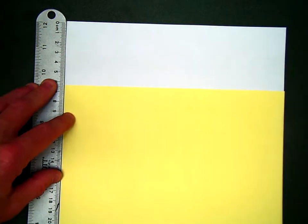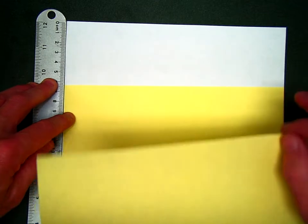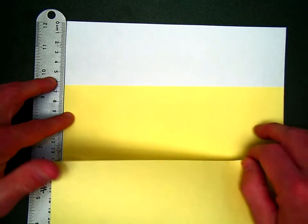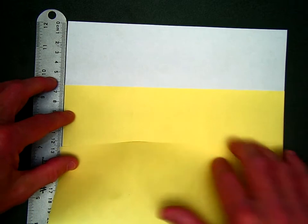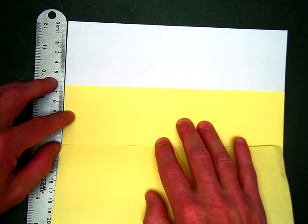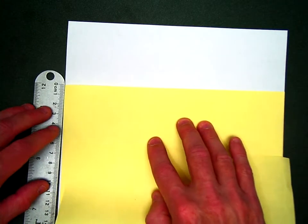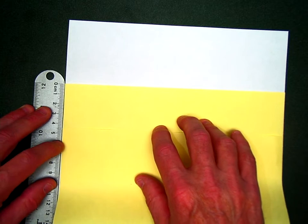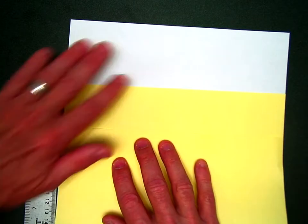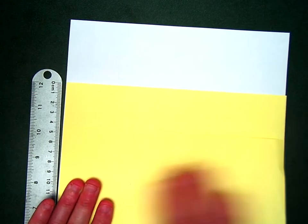So we're gonna fold the bottom part of our second sheet. For me, it's yellow. For you, it's white. Up so that 4.5 centimeters, 4.5 centimeters right here is covered up. And I'm gonna make a nice fold. It's gonna look awesome. Okay.